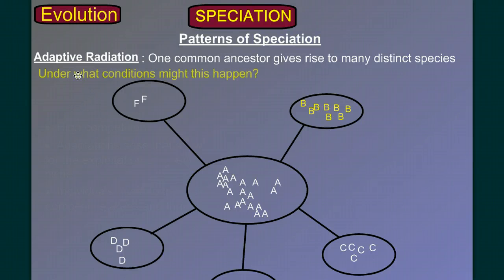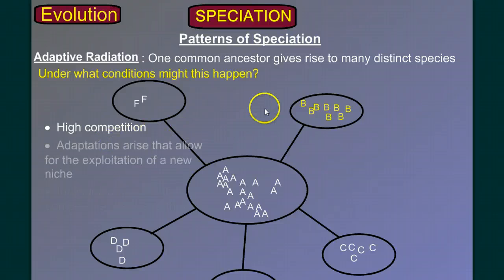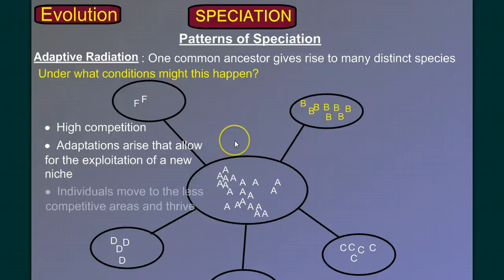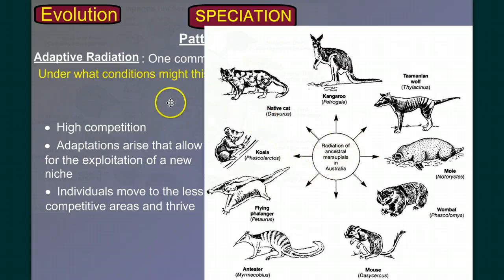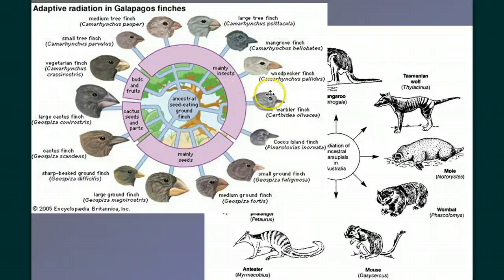Under what conditions would adaptive radiation occur? You have to have a lot of competition — competition drives the move away. You have to have variations within the population, and adaptations must arise that allow for the exploitation of a new niche. Individuals move out into those less competitive arenas and thrive; over time they diverge and eventually become new species. This explains the adaptive radiation of the marsupials in Australia — all the different groups from a common ancestor — and of course it famously explains Darwin's finches: the adaptive radiation of subtle variations in beak shape, which allow different groups of finches to feed on different food sources.